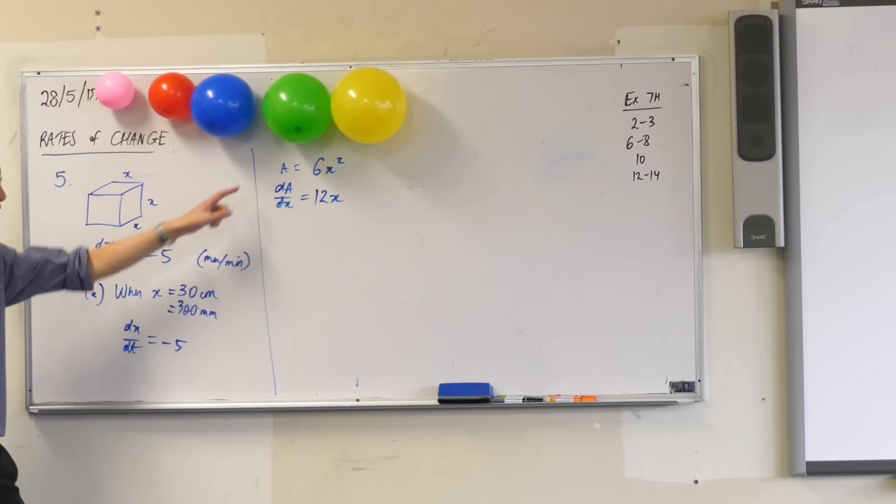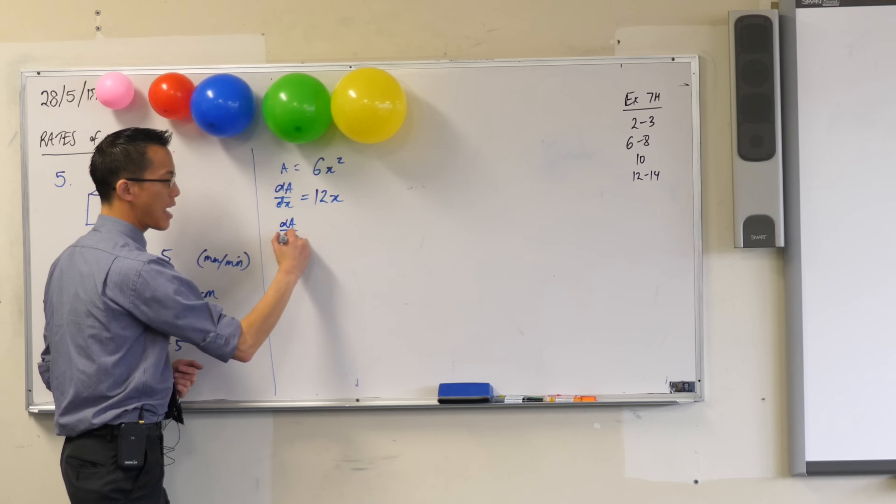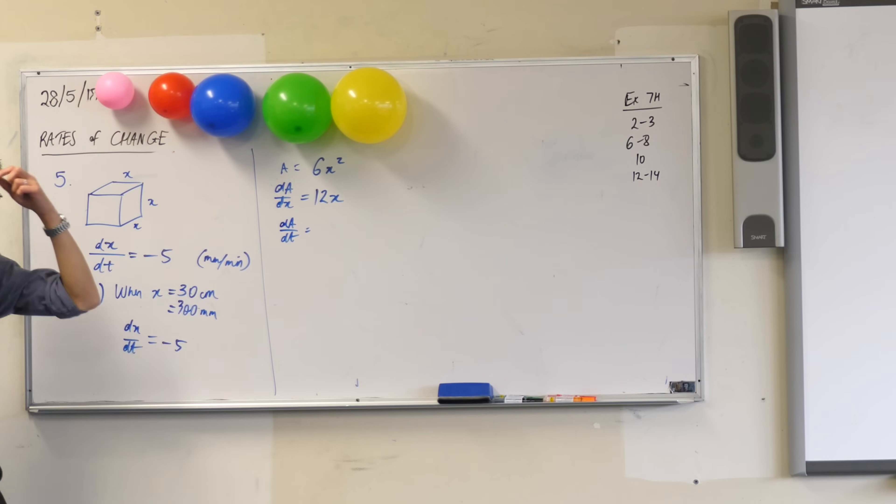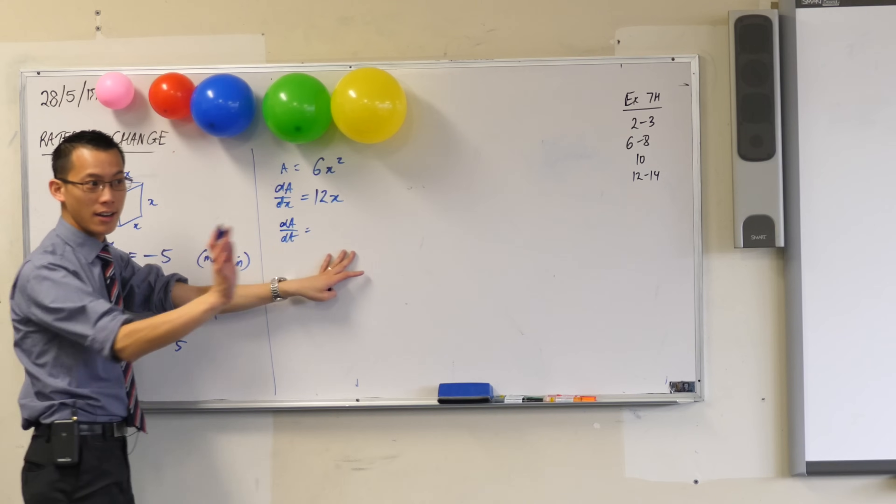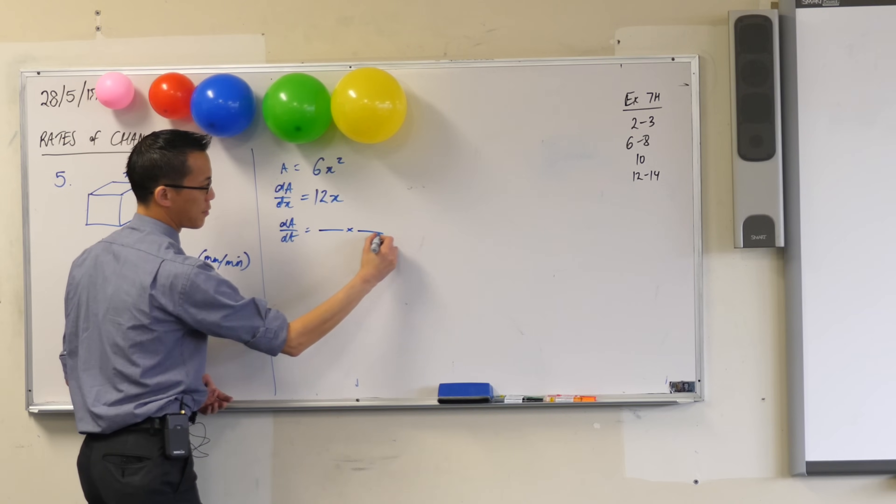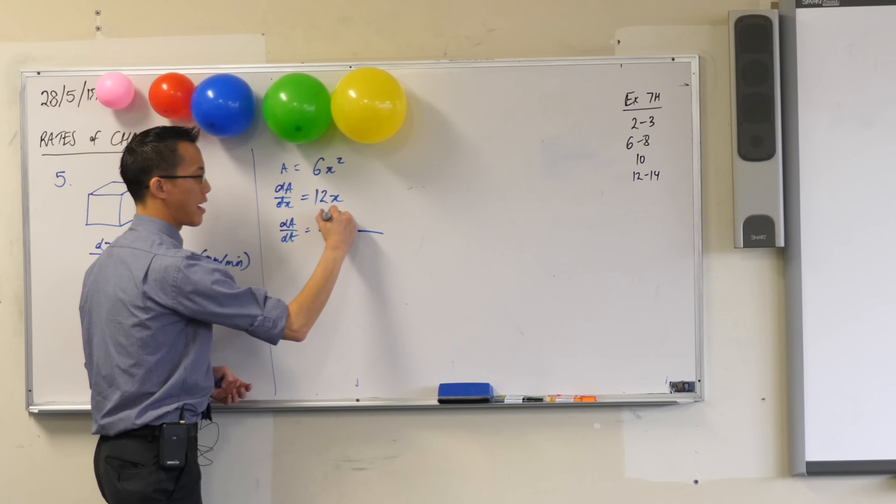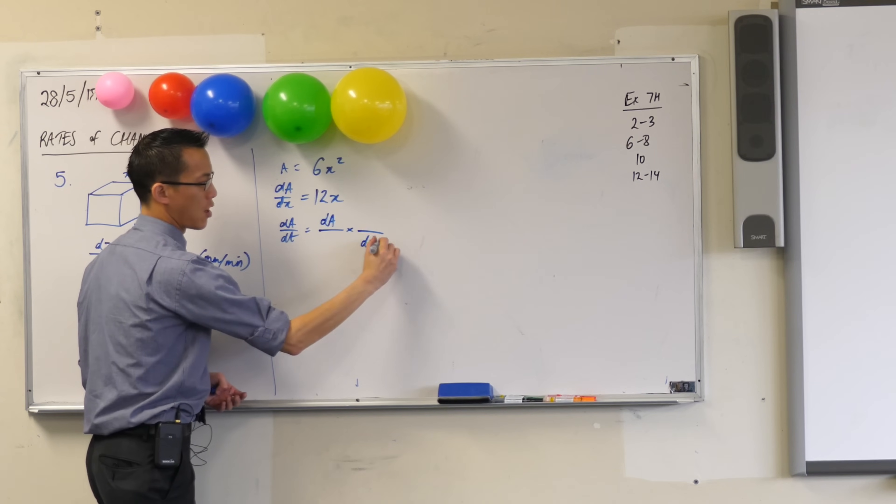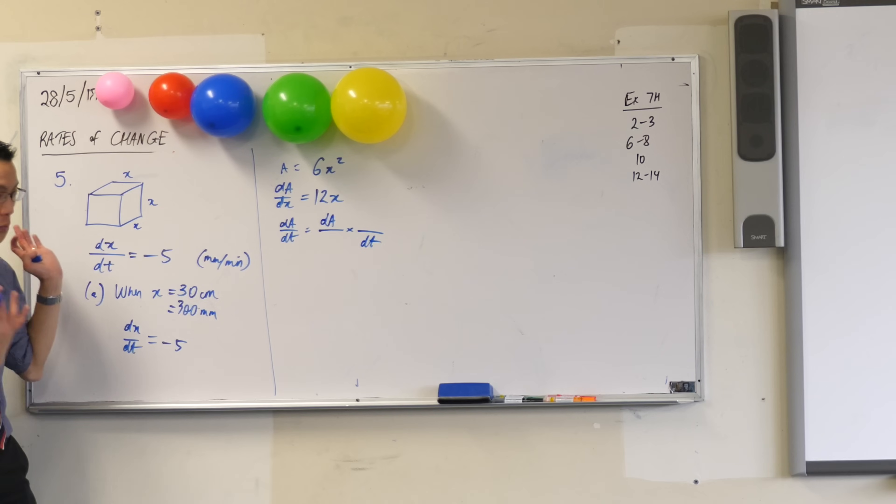But, I'm not interested in dA on dX. I'm interested in dA on... I want a rate of change, right? So it's with respect to time, right? So, in fact, what I really want is dA on dT. So what I'm going to need to do, as I did with my balloon, is I'm going to need to string together some derivatives that will give me this. Something on something times something else on something, right? Now, you want your dA on the top, you want your dT on the bottom. Have a look at the information that you've got. What's the only appropriate choice to put in there? It's dX, right?